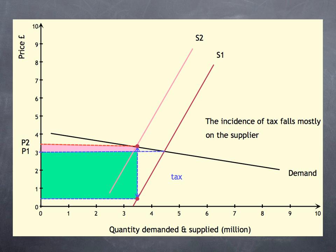If the supplier passed on all the tax to the consumer, the price would go up to £6. And note that at £6, there is no demand.